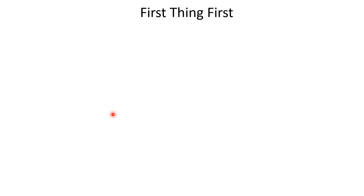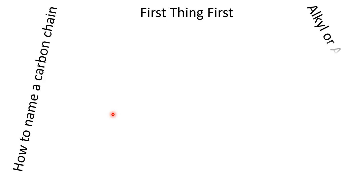First thing first: how to name a chain of a specific number of carbons? It could be the parent carbon chain or a branch. If it is the parent chain, it will have the suffix -ane at the end of the name — for example, pentane. However, if it is a branch, then it will have the suffix -yl at the end of the name — for example, pentyl.